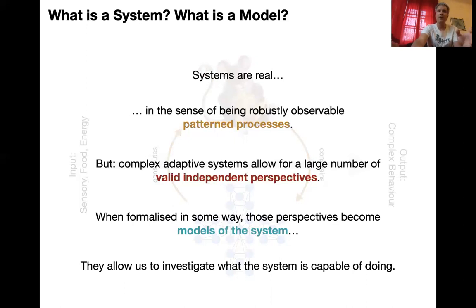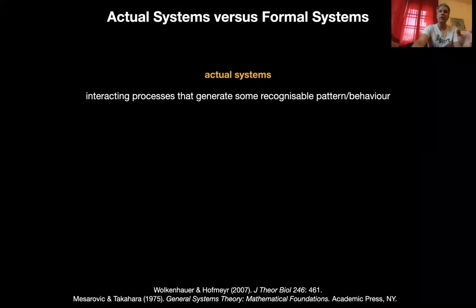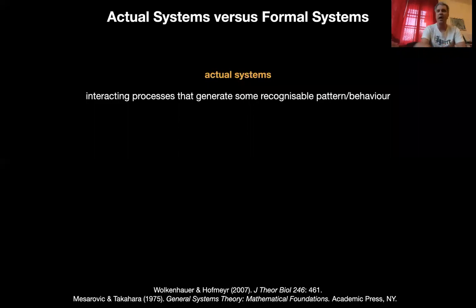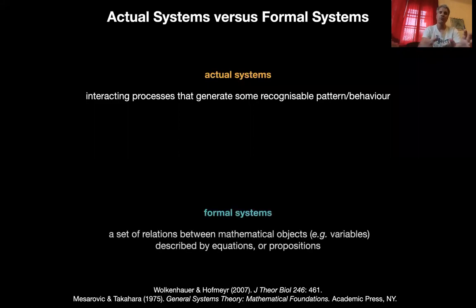We're going to start out by looking at how actual systems — these pattern processes, interacting processes that generate some recognizable behavior — relate to more formal systems. In most cases a formal system is some set of relations between mathematical objects, for example variables that are described by equations or propositions.